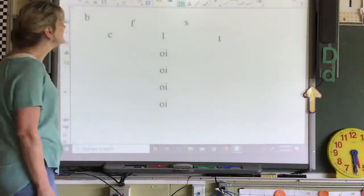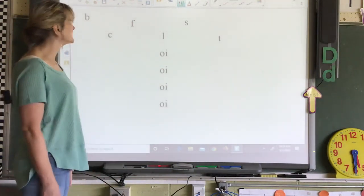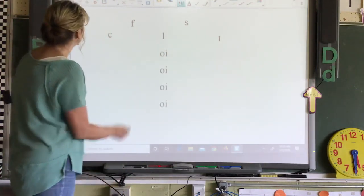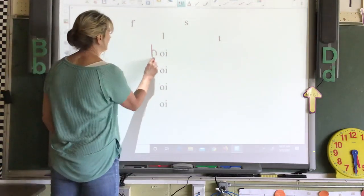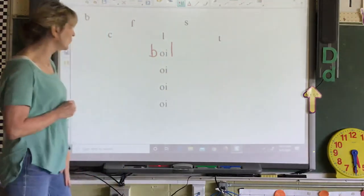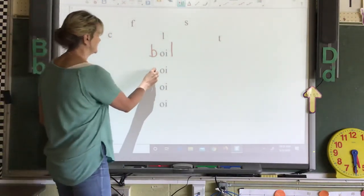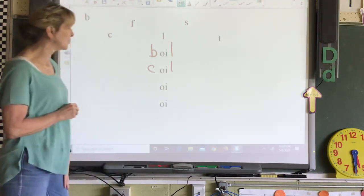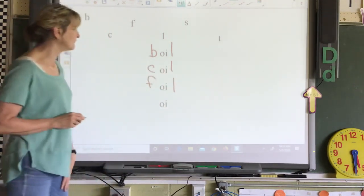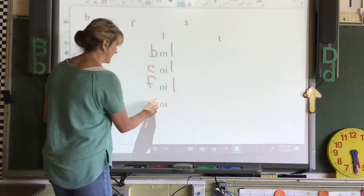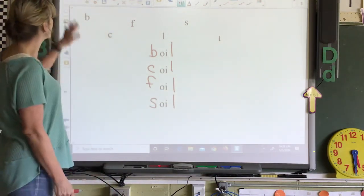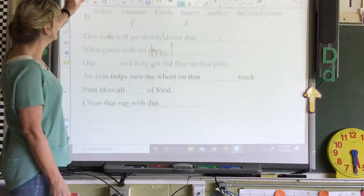Let's build some OI words using these letters up here. That's B and L for boil. C and L for coil. F and L for foil. S and L for soil. And I'm sure you can come up with more also.